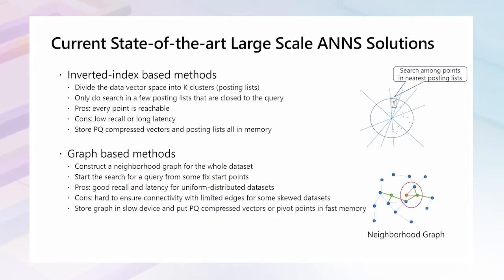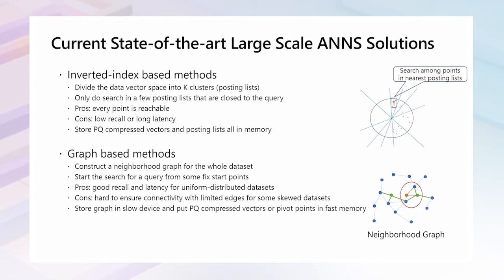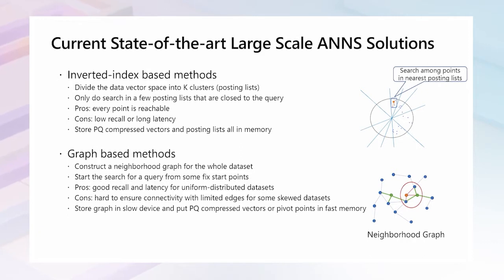Most solutions in the literature mainly focus on fast, high-recall search in-memory. They cannot be used in large-scale vector search scenarios due to the capacity issue. There are only a few approaches focused on large-scale vector search, and they can be divided into two categories: inverted index-based solutions and graph-based methods.